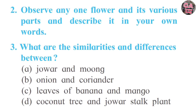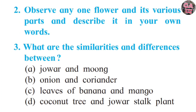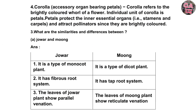Here we completed our second question. Now move towards the third question: What are the similarities and dissimilarities between the following? A. Jowar and Moog — make two columns. Jowar is a type of monocot plant; Moog is a type of dicot plant. Jowar has a fibrous root system; Moog has a taproot system. Leaves of Jowar show parallel venation; leaves of Moog show reticulate venation. Similarity: both Jowar and Moog are annual plants.